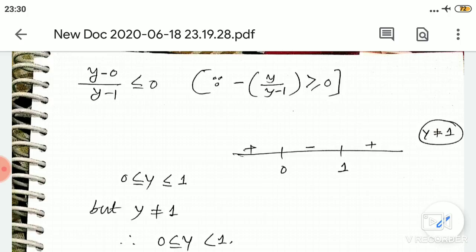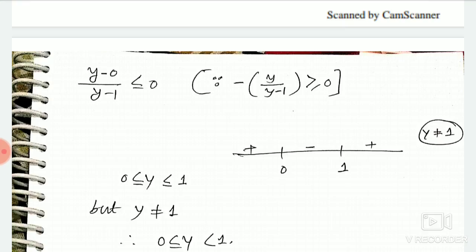And less than 0, take anything, it will be more negative, denominator negative. That will be positive. Okay? So y equals to what? Greater or equal to 0, less or equal to 1.